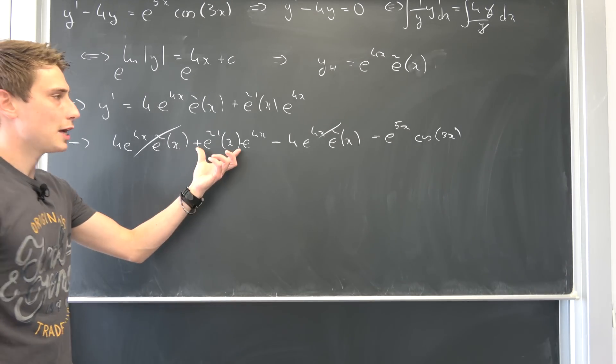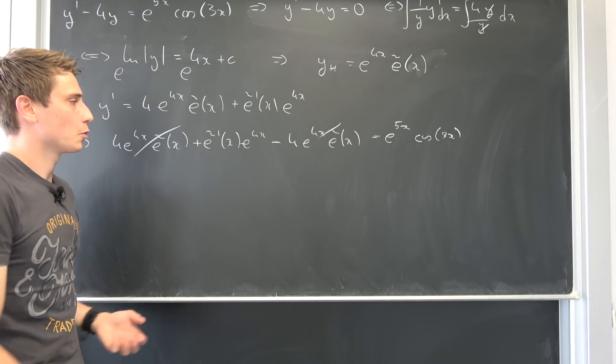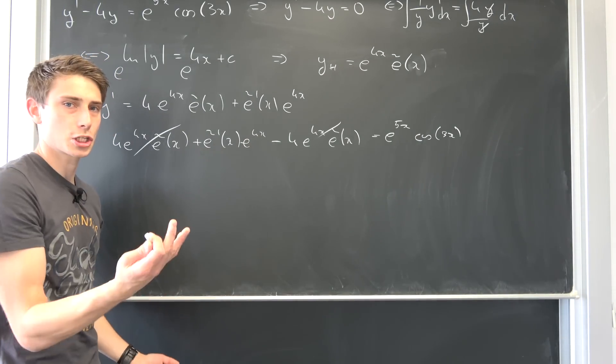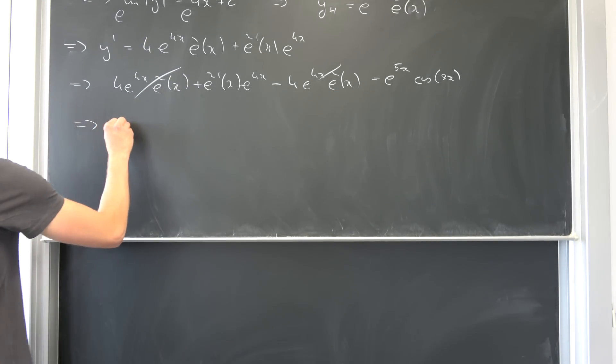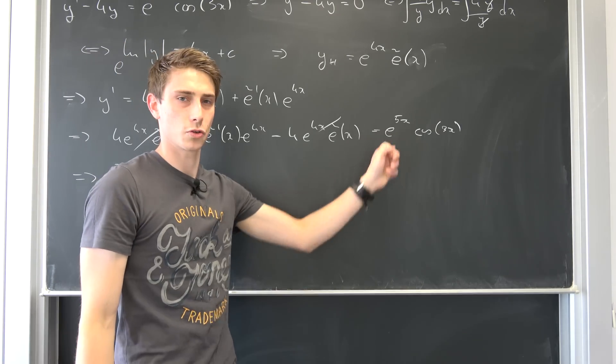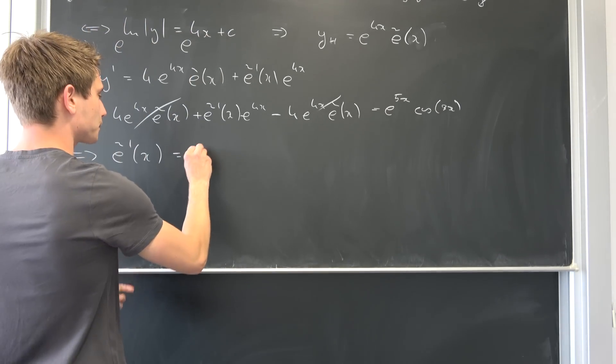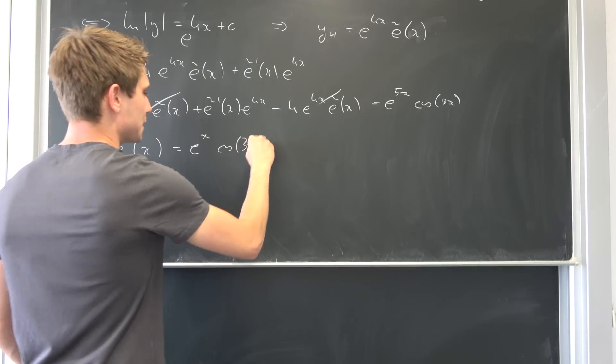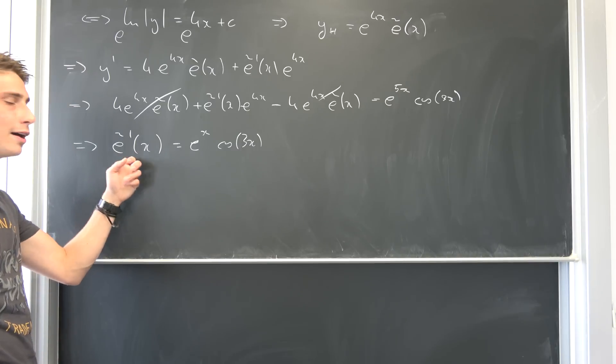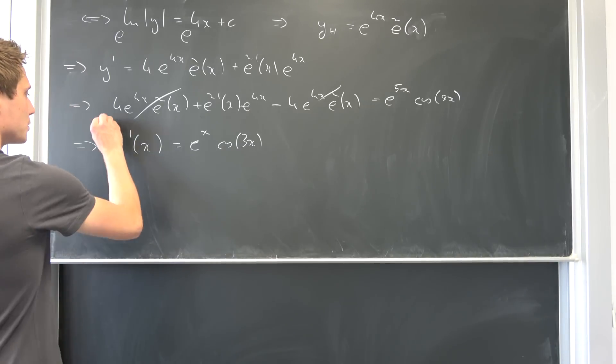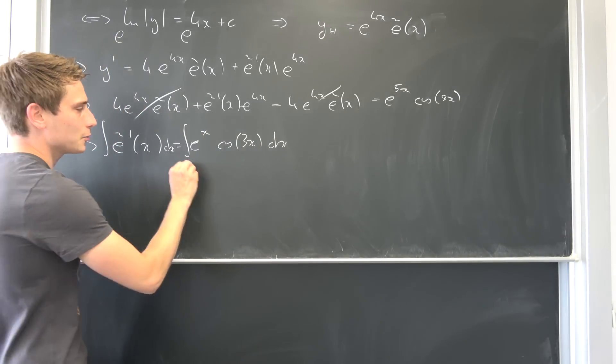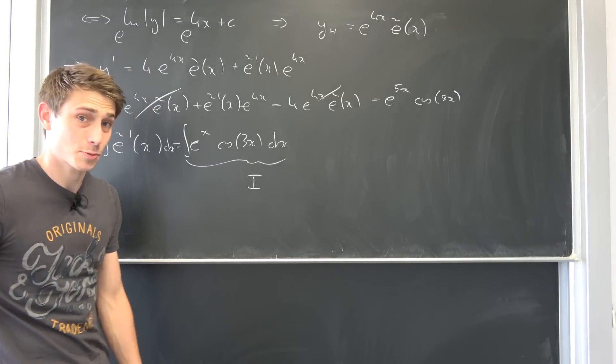And well now we have this expression right here and why not divide both sides by e to the 4x? It's never going to be zero. And then we have an expression for e-schlange prime of x. So if we do this we end up with e-schlange prime of x being equal to well this term and this term is going to cancel out to e to the x cosine of 3 times x. And well now it's just a matter of integrating both sides with respect to x to get our e-schlange of x. So integrating both sides with respect to x. What is this going to evaluate to? I would like to call this thing right here i and i'm going to see you on the next blackboard.